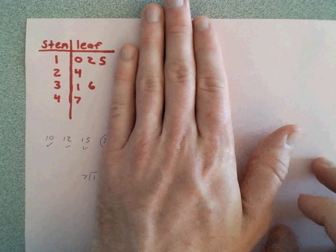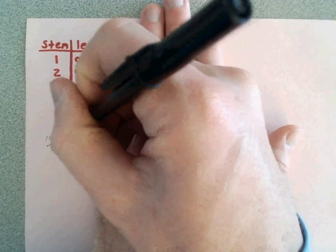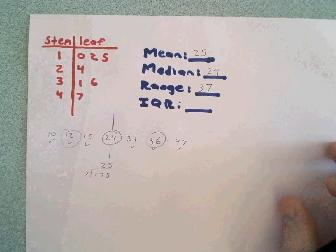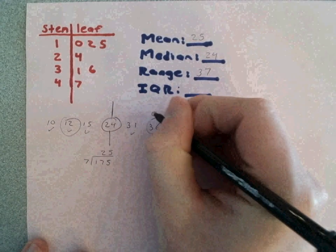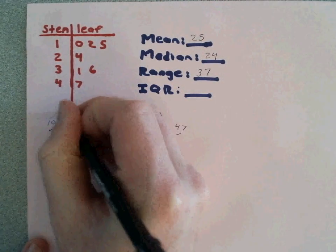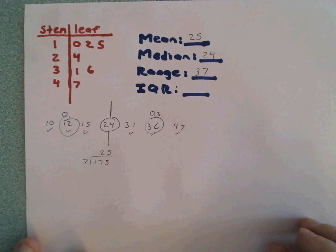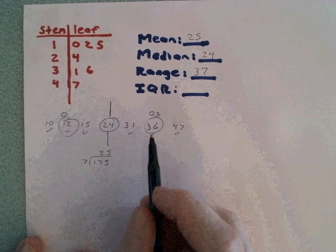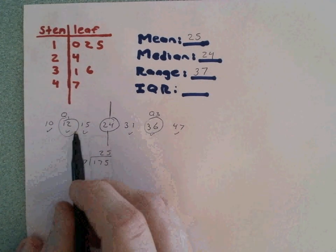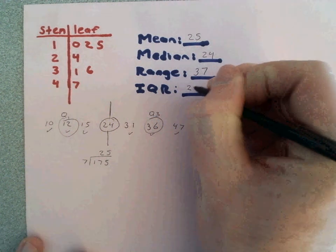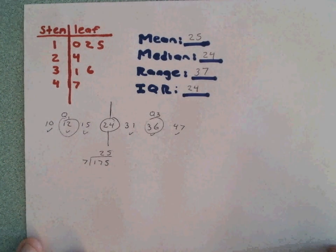Then we've got to do the same thing for the lower half. The 12 is right in the center. So Q3 is going to be 36, Q1 is going to be 12. So when we take 36, Q3, and subtract 12, Q1, we get an interquartile range of 24.